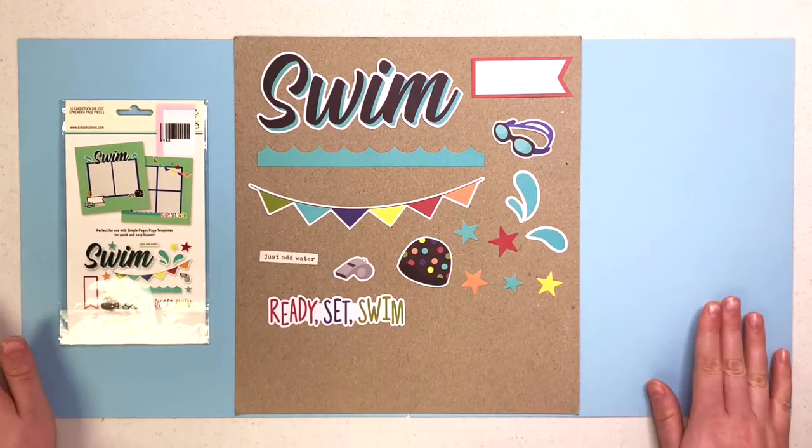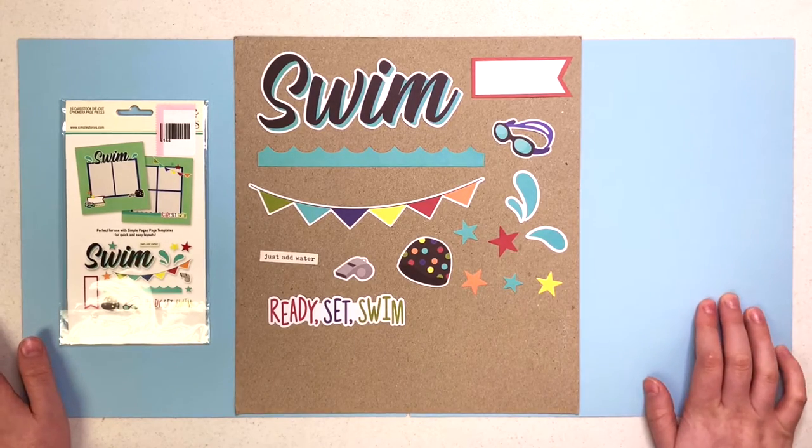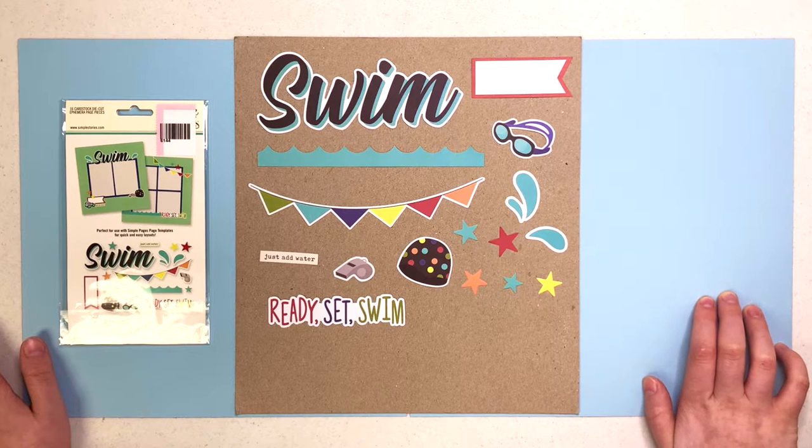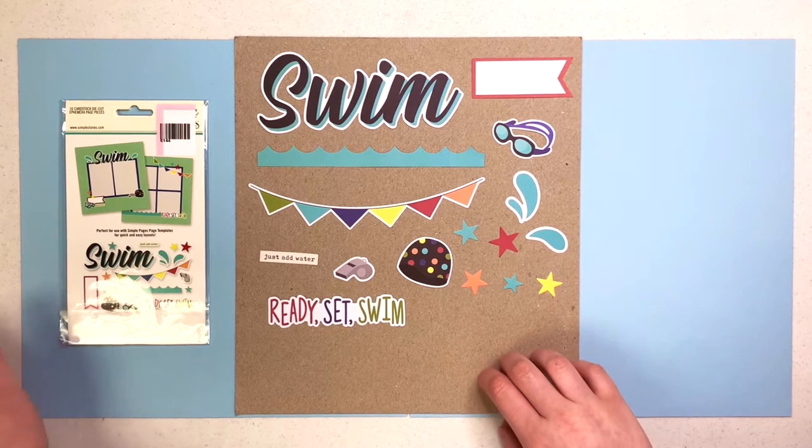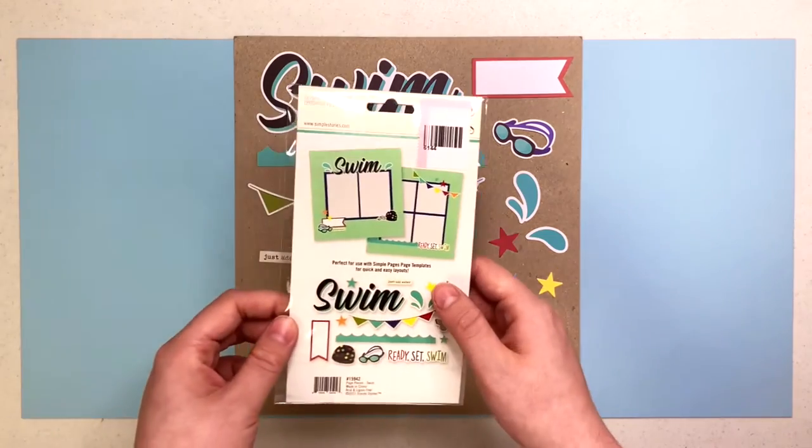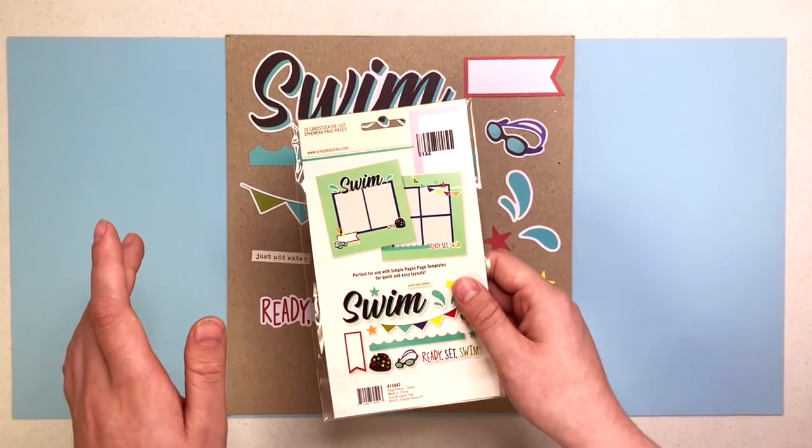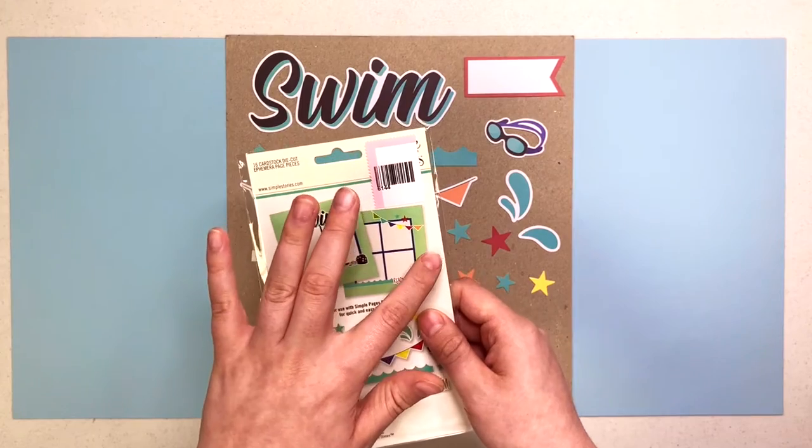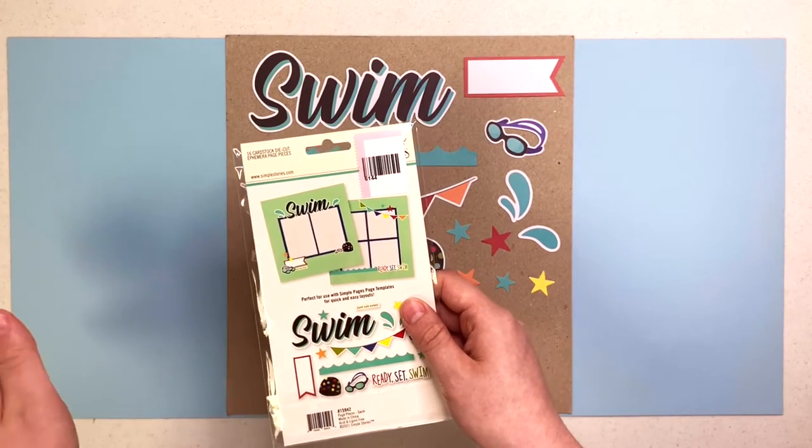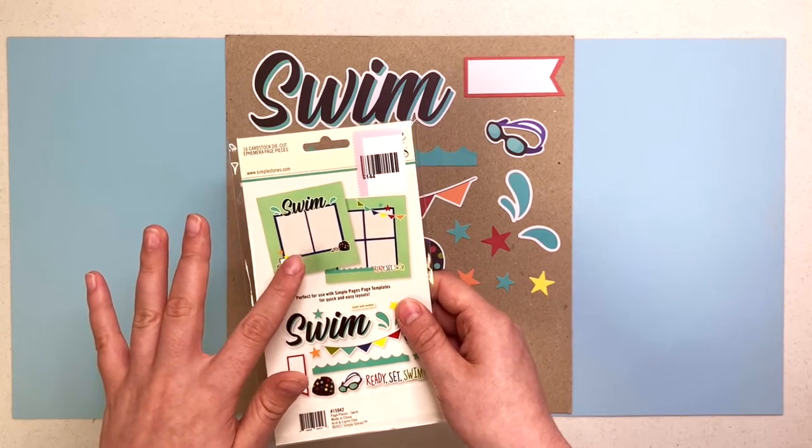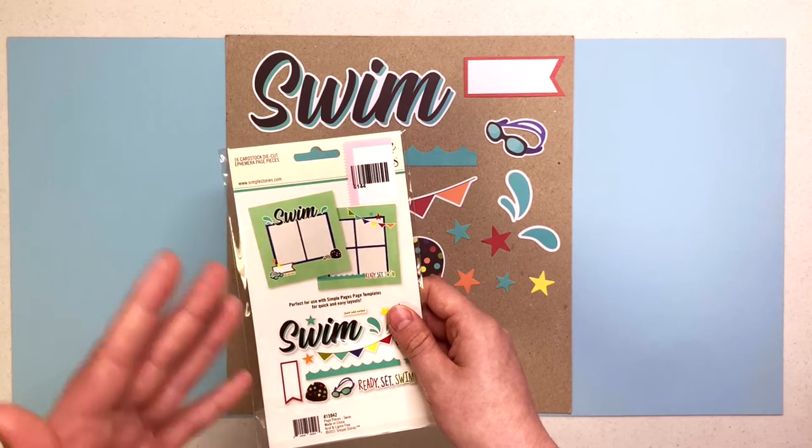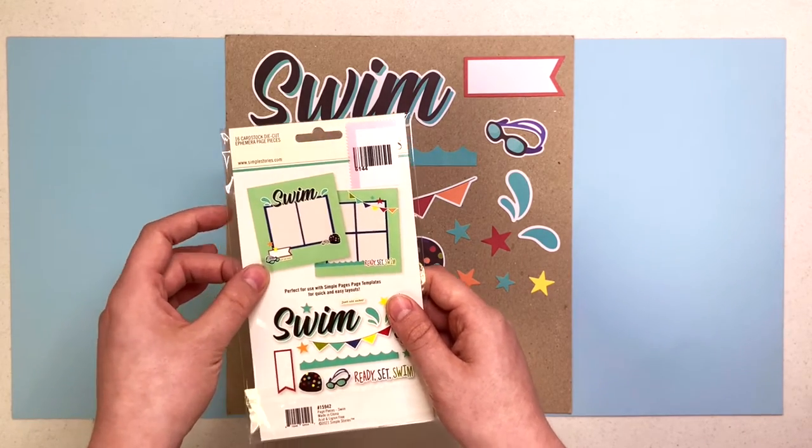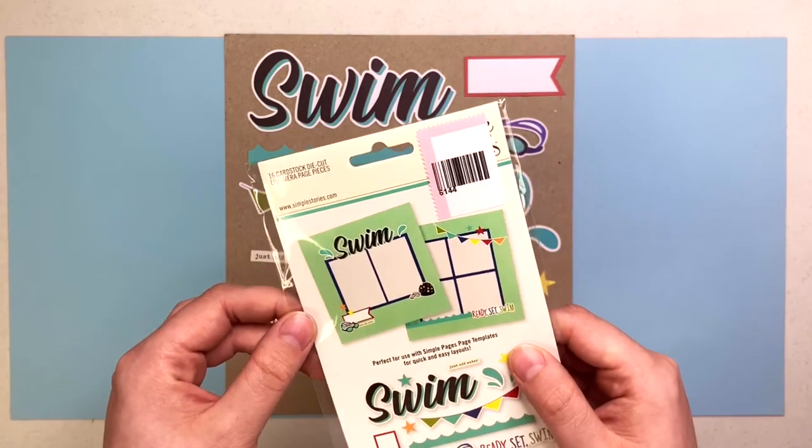The really cool thing about our page pieces is the amount of die cut pieces that come with it as well as the back of this. So Simple Stories is really cool and they incorporate their page templates which we'll also be using today. They show you a sample layout on the back of all their page pieces sets which is really neat.